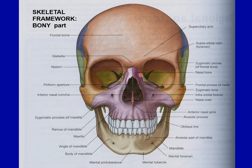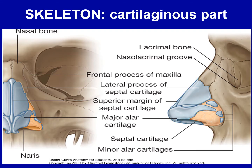The bony framework is formed by the two nasal bones in the midline and on either side by the frontal or lateral process of the maxilla. This bony part terminates in front and below at the piriform aperture. The cartilaginous framework of the nose is formed by five main cartilages: the two lateral processes of the septal cartilage, a single median septal cartilage, and two major alar cartilages. There are also various minor alar cartilages which support this framework.